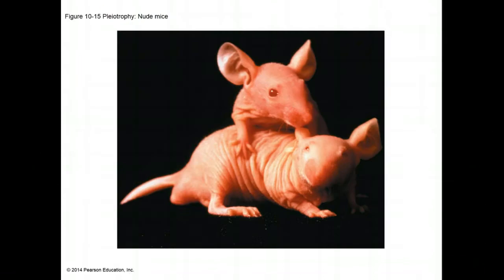In the previous segment we talked about incomplete dominance, multiple alleles, codominance, and polygenic inheritance. Now let's talk about something called pleiotropy.